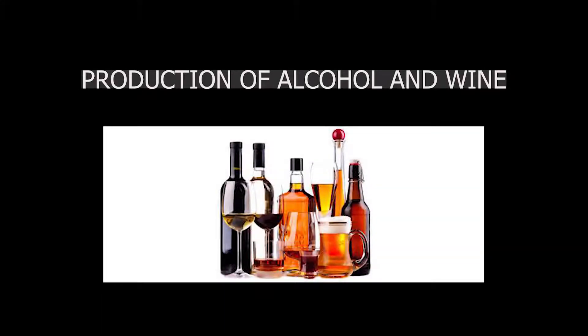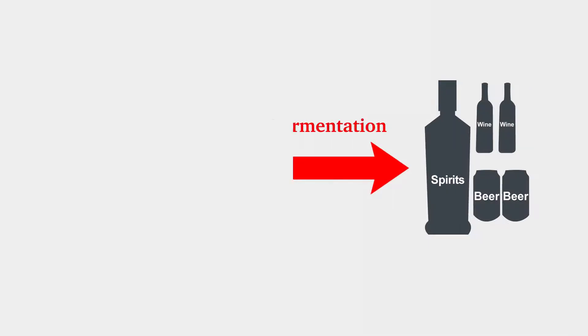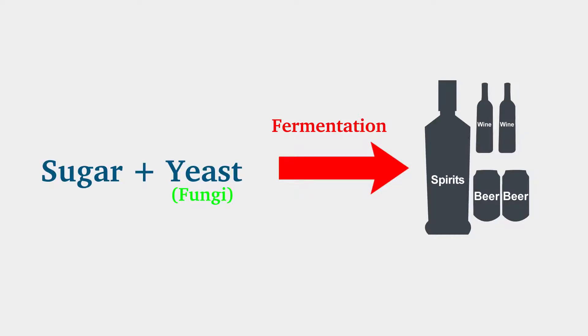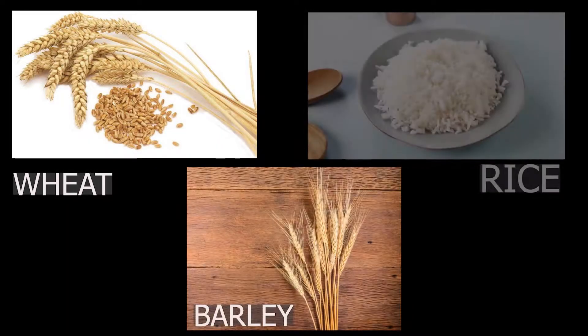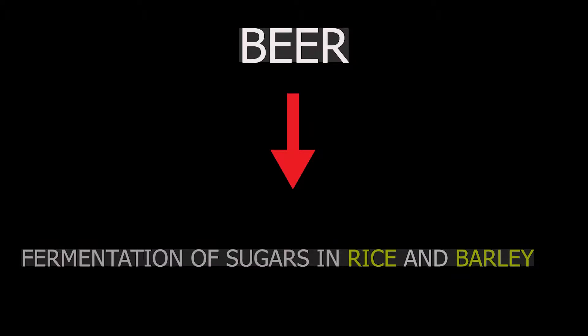Uses of microorganisms in production of alcohol and wine. The liquor industry depends on microbes for their products. Wine and alcohol are produced as a result of fermentation process. In fermentation process, sugar is broken down into alcohol and carbon dioxide by yeast. Generally grains such as wheat, barley, and rice are used as source of sugar. For example, beer is produced by the fermentation of sugars in rice and barley.